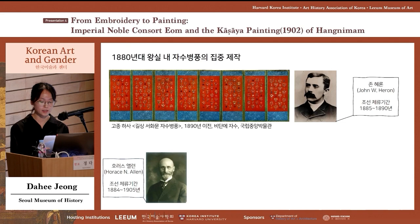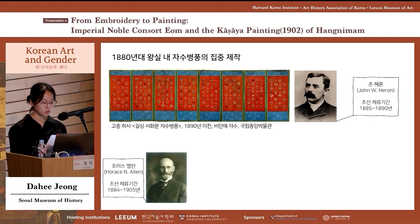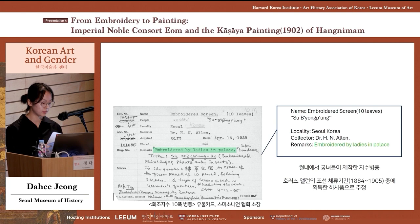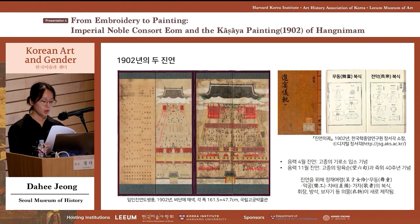Starting with the U.S. in 1882, Joseon began establishing ties with Western countries, and embroidered folding screens were adopted by Gojong as gifts to Western diplomats. From the early to mid-1880s, the needle workers of Subang had to intensively produce these folding screens. Similarly, 1902 was the year when imperial banquets were held, requiring intense embroidered labor.